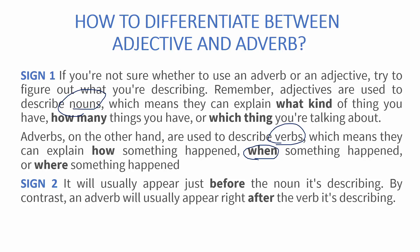The second sign that differentiates between the two is placement. An adjective is used before the noun, while an adverb is used after the verb which it is describing. These are the two signs which will help you to use and place your adjective or adverb in an apt manner.